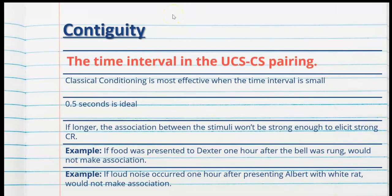Contiguity refers to the time interval between the UCS and the CS pairing. Classical conditioning is most effective when the time interval is small — ideally half a second. If the food was presented to Dexter one hour after the bell was rung, the dog is not likely to have made an association. That's why Pavlov presented the food immediately or half a second after ringing the bell. If the loud noise occurred one hour after presenting Albert with the white rat, the association would not be as strong. For classical conditioning to be successful, the time interval between UCS and CS needs to be small.